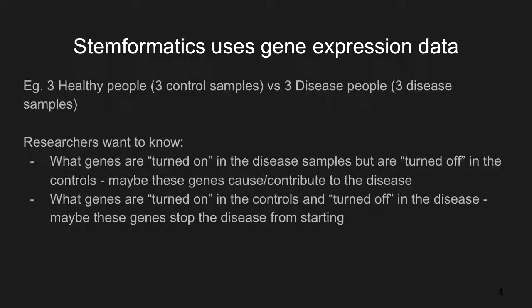Stimformatics uses gene expression data. For example, in a biological experiment, you take three samples from three healthy people and three samples from three diseased people. Stimformatics uses gene expression data to show you differences between those samples. When users come to Stimformatics, what they try to look for is what genes are turned on in the disease sample but are turned off in the control samples — maybe these genes are contributing to the disease.